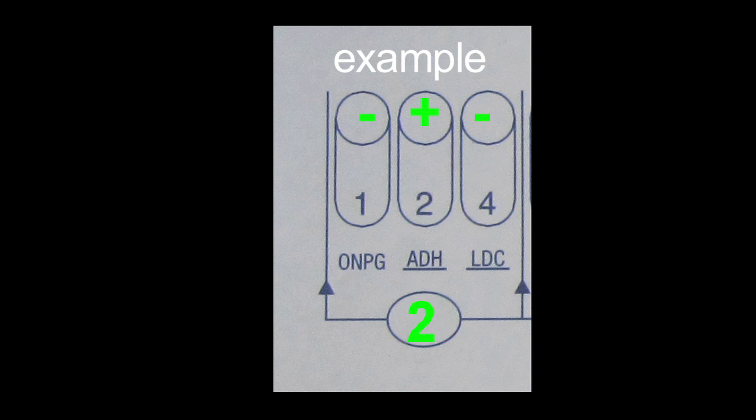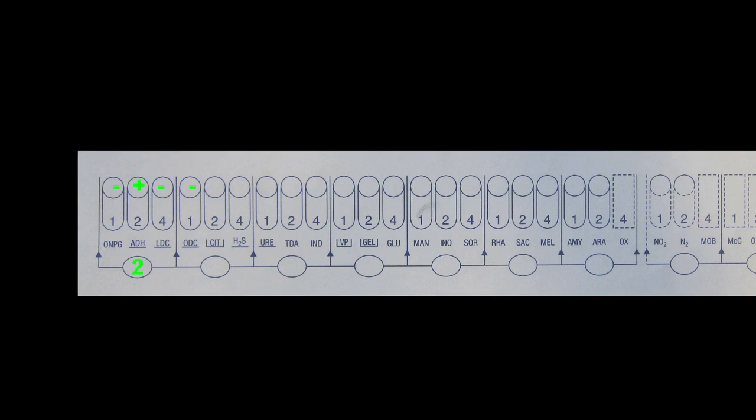All the numbers for the positive reactions are scored for each triad of tests, and the seven-digit profile number should be obtained.